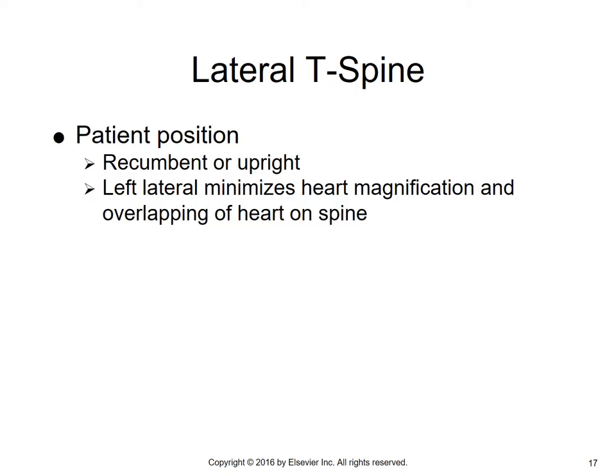For the lateral T-spine, the patient position can be recumbent or upright. Left lateral is preferred because it minimizes heart magnification and overlapping of the heart on the spine. If the patient turns to the left on the table, you can visualize the thoracic spine. Always ensure the T-spine is parallel with the table if the patient is in a recumbent position.